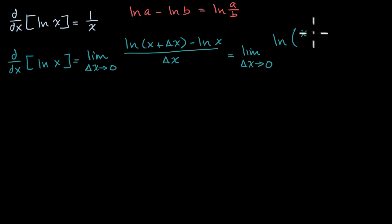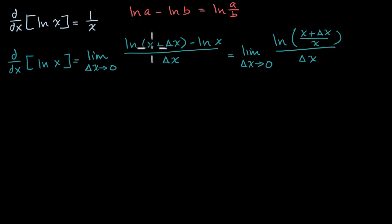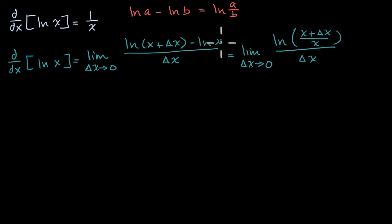So that's x plus delta x over x, all of that over delta x. All I did: if I have natural log of that minus natural log of that, that's the same thing as the natural log of the first expression divided by the second expression. That comes straight out of our logarithm properties.